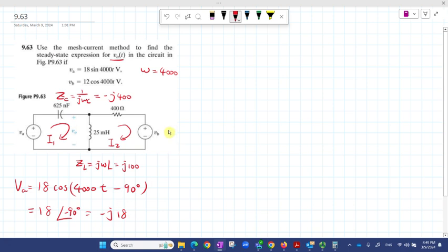For VB here, it's just cosine form, so zero, that's easy. Then we start looking at each loop and all the voltages together equal zero. This one equals VA, which is -j18. The current is entering the negative and leaving the positive, so this is a voltage rise, so we have negative (-j18). Then positive I1 multiplied with -j400, plus the voltage drop on this one, which is I1 minus I2 multiplied with the impedance, equals zero.